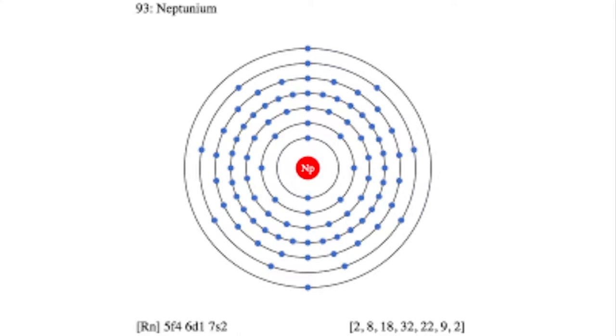Neptunium is a metal found in the actinides group. It has 93 protons, 93 electrons, and 144 neutrons.